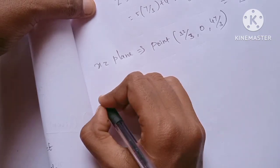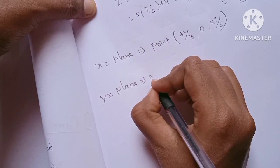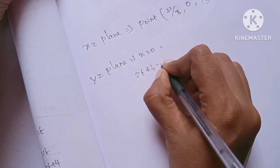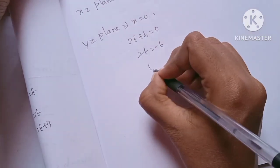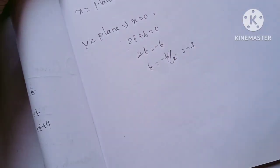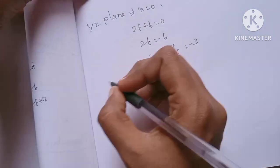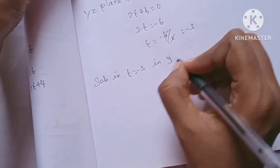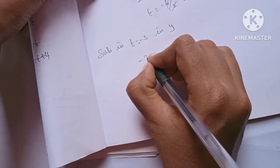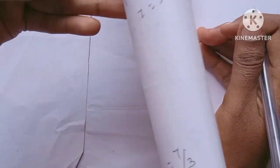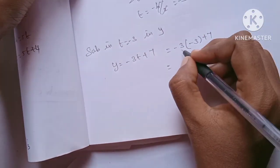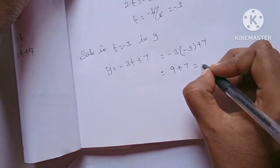Second part: the YZ plane, where x is equal to 0. So 2t plus 6 equals 0, giving t equals minus 3. Then y equals minus 3t plus 7 equals minus 3 into minus 3 plus 7 equals 9 plus 7 equals 16.